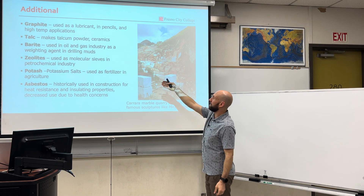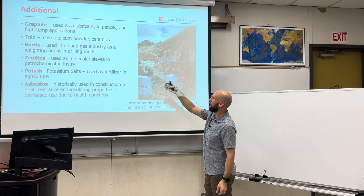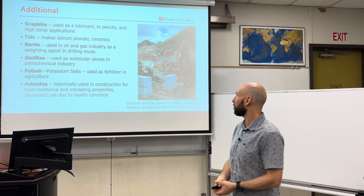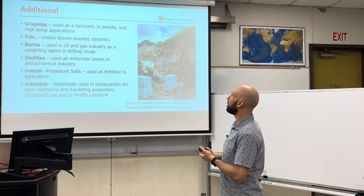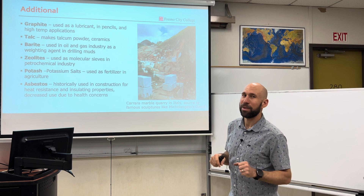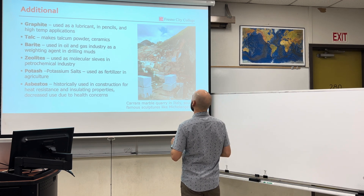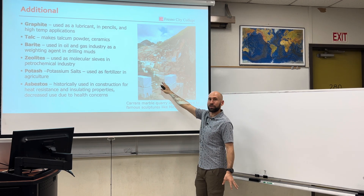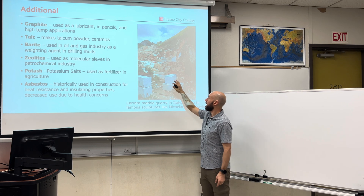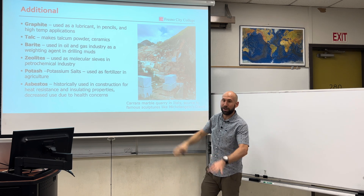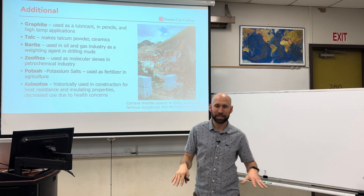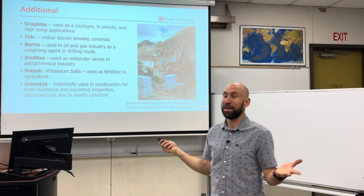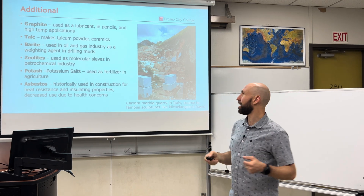Graphite, talc, barite, zeolites, potash, and asbestos are all various types of non-metallic mineral resources that we use. Asbestos is not so popular anymore, but it was for a long time. Here is a big quarry for marble, used for sculptures, marble countertops, and quartz countertops. What don't we use mineral resources for? Pretty much everything.